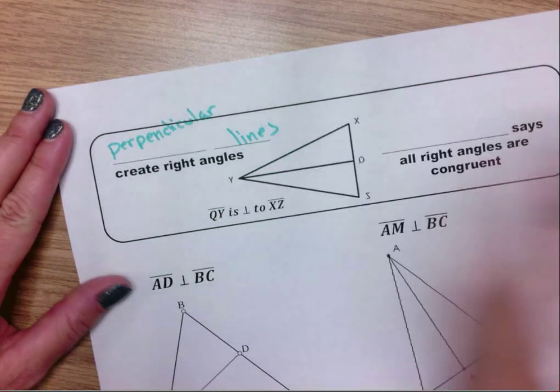Perpendicular lines create right angles. So QY is perpendicular to XC. QY, XC. That means this is a right angle, this is a right angle.